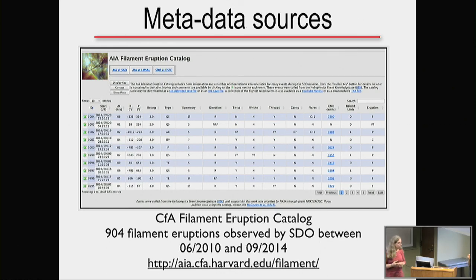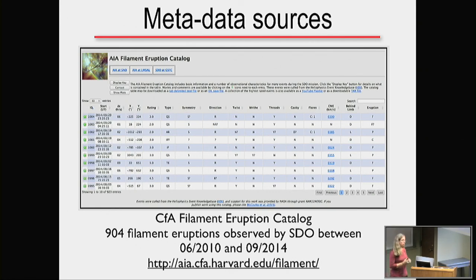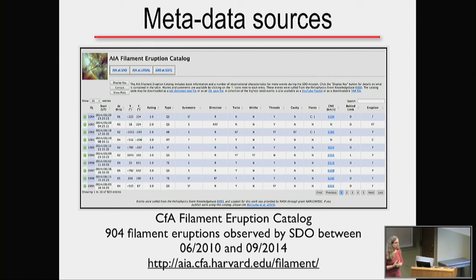Question: is the filament tracking done manually or automatically? It's done automatically. There is an algorithm that Dustin Kempton uses — if I were going to say the word Bayesian statistics, that's where I would have used it. I'm not super familiar with the details of the algorithm, so I didn't go into a lot of detail; he just hands me the results.